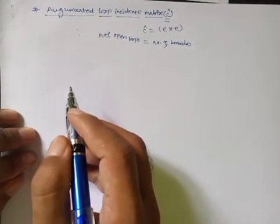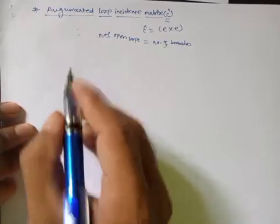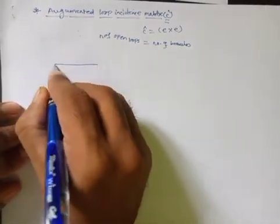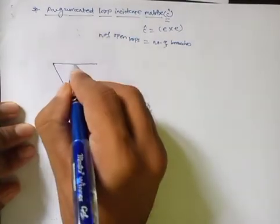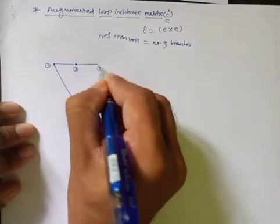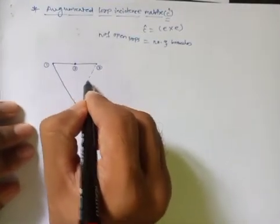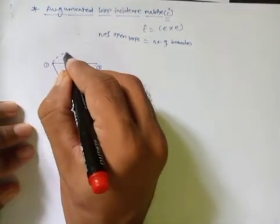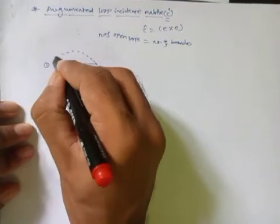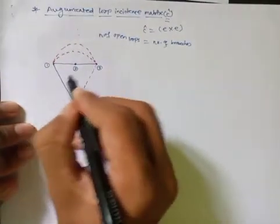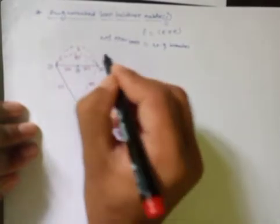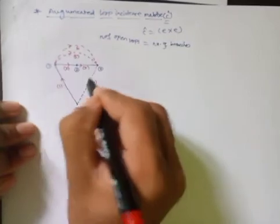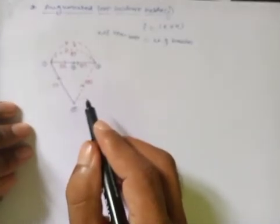We will consider the same directed network graph that was used for the formation of the basic loop incidence matrix. The tree consists of four nodes: node number one, two, three, and reference node zero. The remaining elements act as links. This network graph consists of six elements — element number one, two, three, four, five, and six — with directions assigned to form the oriented network graph.